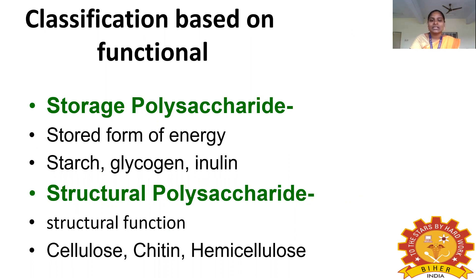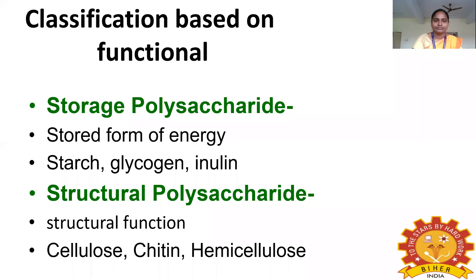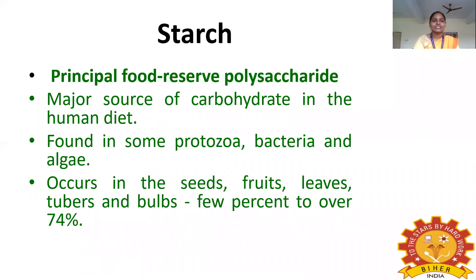Storage polysaccharides are the stored form of energy. Examples include starch and inulin (for plants) and glycogen (for animals). Structural polysaccharides serve a structural function. Examples include cellulose and hemicellulose (for plants) and chitin (for animals).